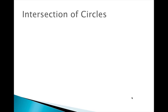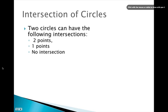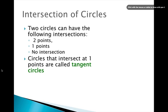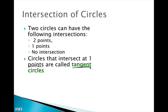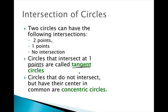Intersections of circles — there are three different types. Two circles can intersect at two points, at one point, or not at all. Circles that intersect at one point are called tangent circles, similar to a tangent line which intersected the circle at one point. Circles that do not intersect but have a common center are called concentric circles.